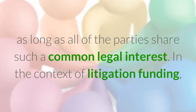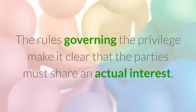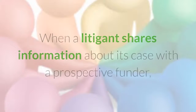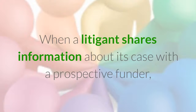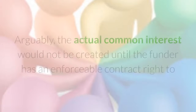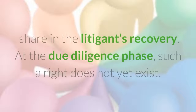In the context of litigation funding, the challenge of invoking the common interest privilege is a matter of timing. The rules governing the privilege make it clear that the parties must share an actual interest, not a prospective one, when they share confidential or privileged information. When a litigant shares information about its case with a prospective funder, the parties have only a potential common interest, not an actual one. Arguably, the actual common interest would not be created until the funder has an enforceable contract right to share in the litigant's recovery.